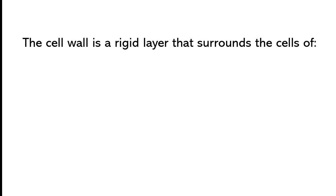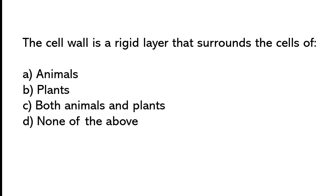The seal wall is a rigid layer that surrounds the seals of: animals, plants, both animals and plants, or none of the above. The correct answer is option B. The seal wall is a rigid layer that surrounds the seals of plants.